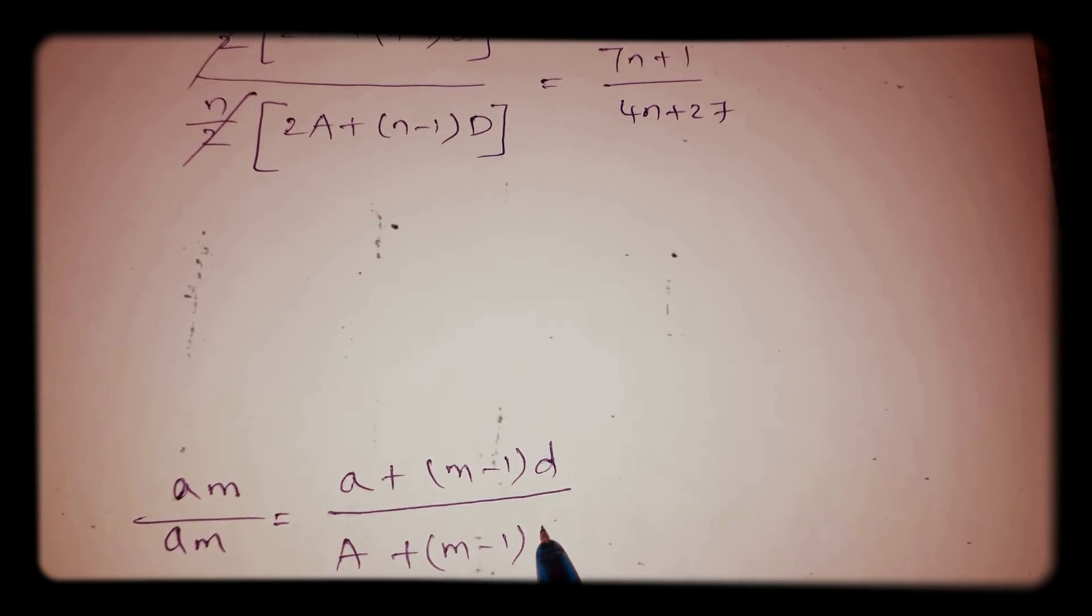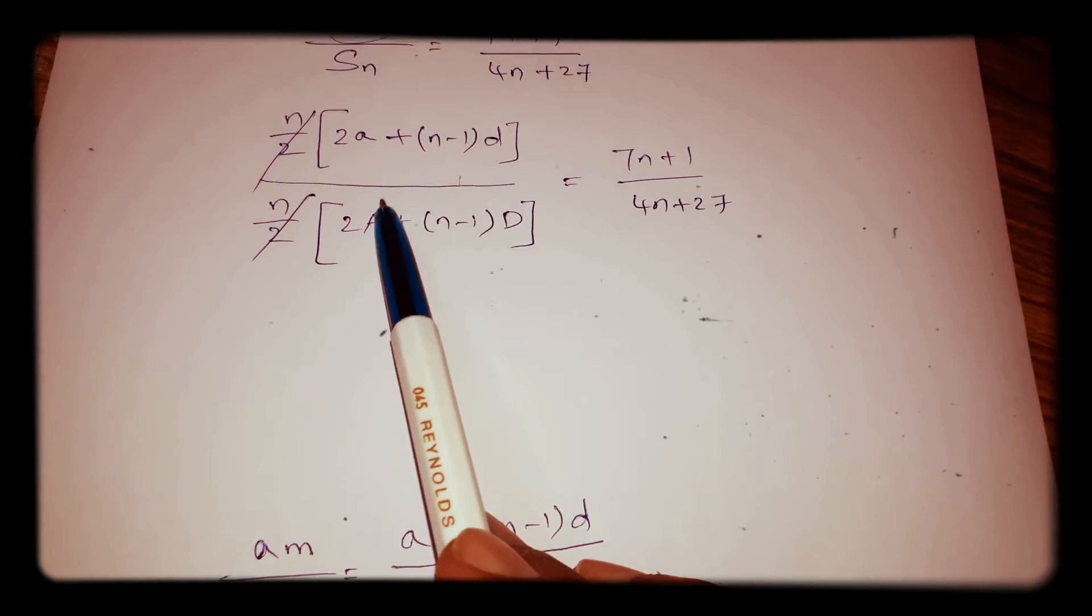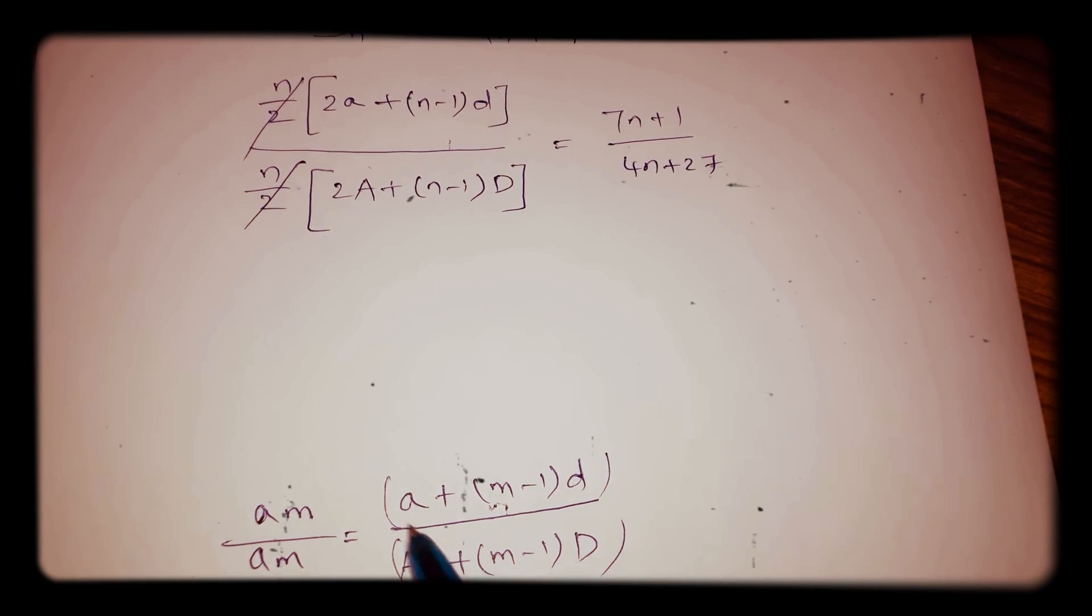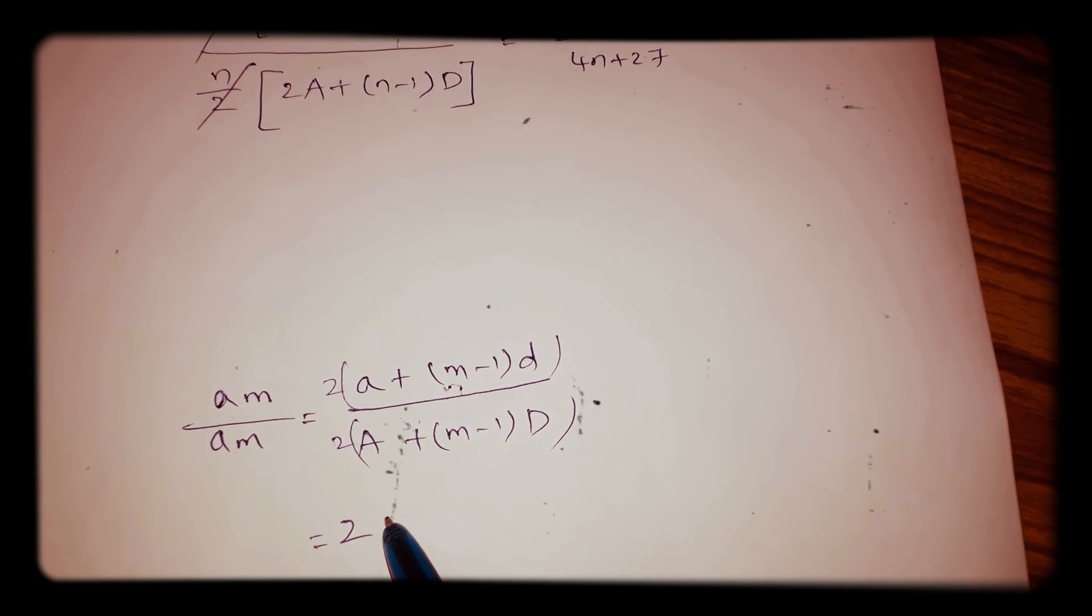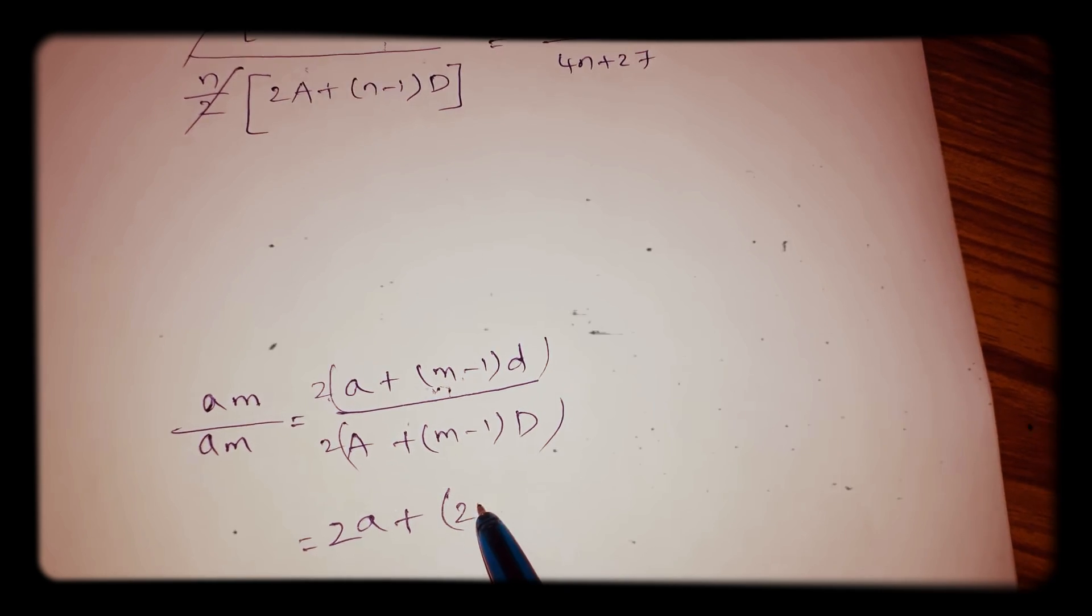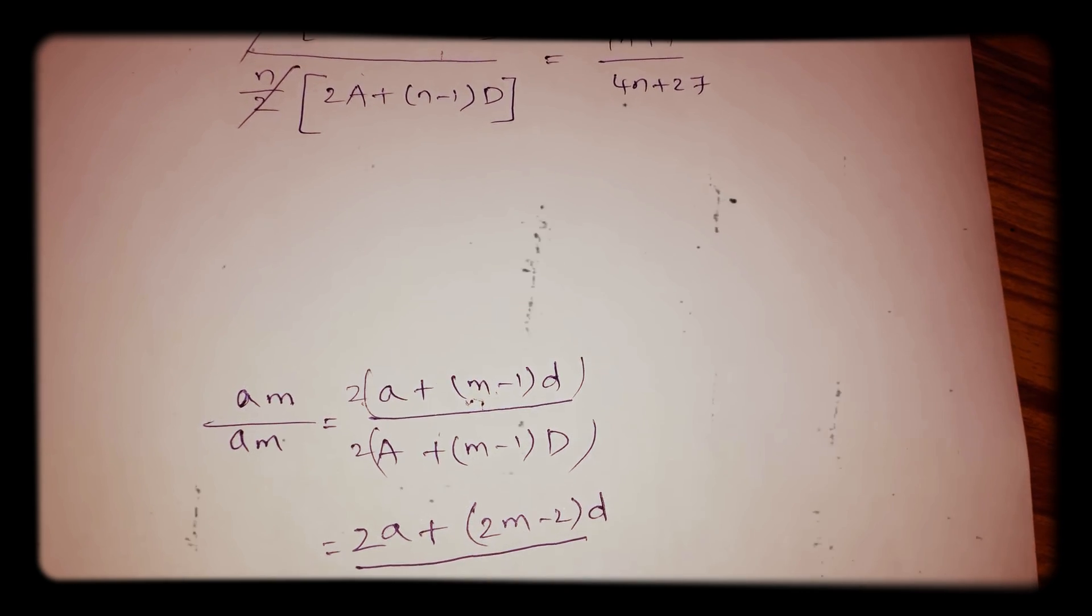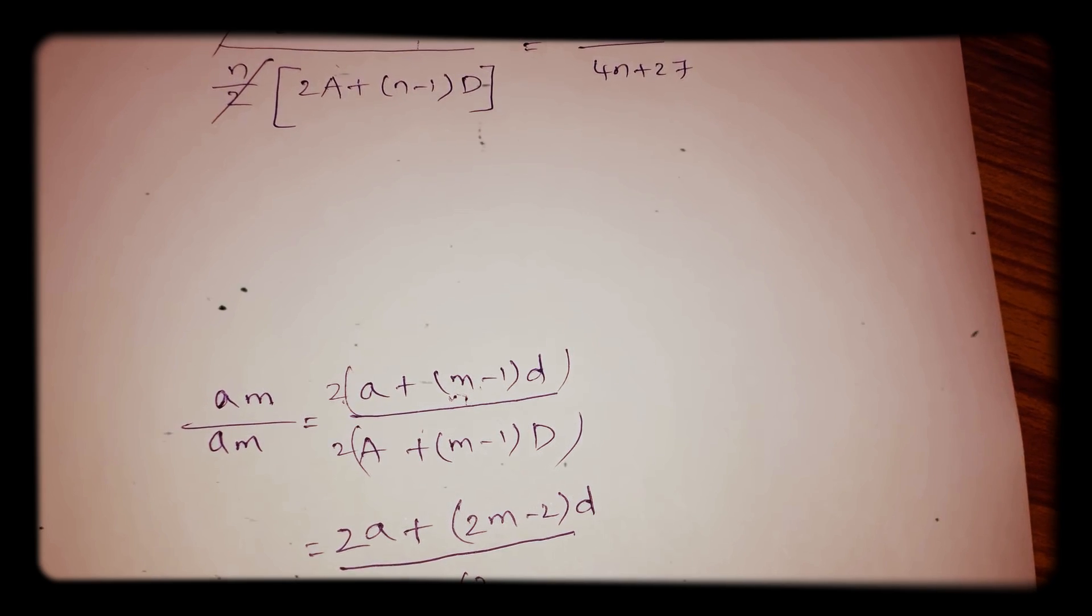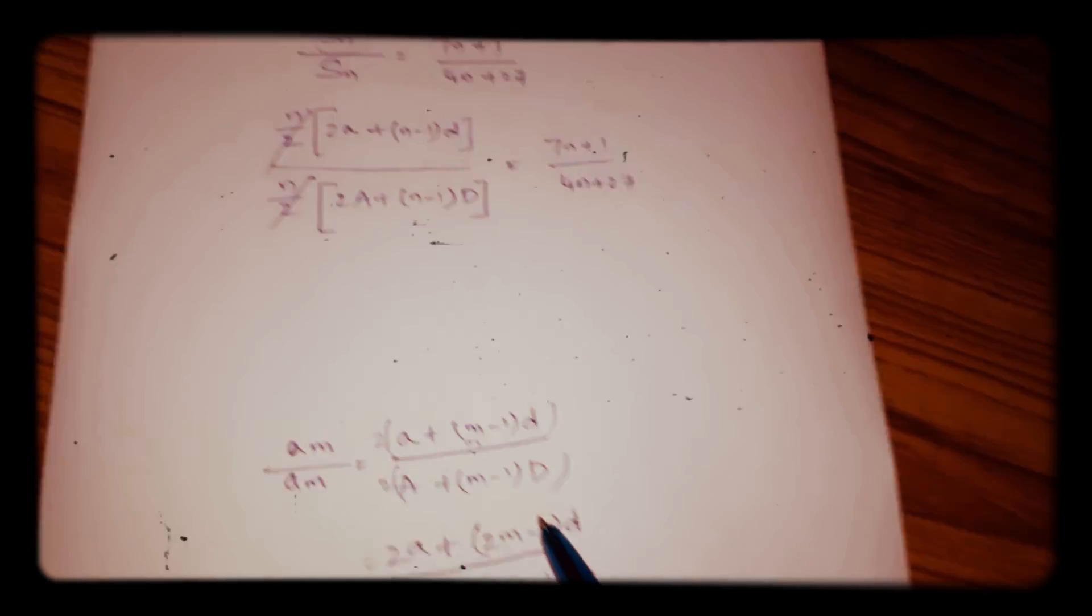Now to compare these two, here we have 2a, here we have just a. So this equation, multiply and divide by 2. We will get 2a, multiply 2 inside, like (2m-2)d by [2A + (2m-2)D].